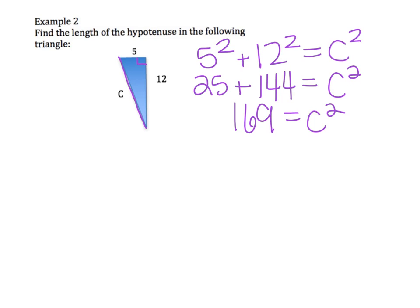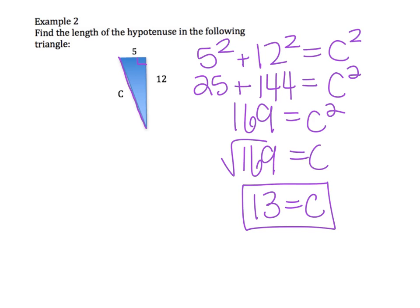And then to solve for C, I just have to take the square root of 169, and I get 13. So C equals 13, or the hypotenuse in this figure is 13 units.